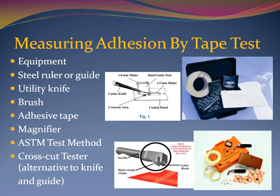If the project specification or other document requires you to perform an adhesion test according to ASTM D3359, which is the adhesion by tape test, you will need the testing equipment listed on the slide. This includes a steel ruler or cross-cut template, a utility knife equipped with a new blade, a small bristle brush, adhesive tape, a magnifier, and a copy of the ASTM test method. A cross-cut tester equipped with cutter blades of various spacings can be used in lieu of a template or guide and a knife blade.